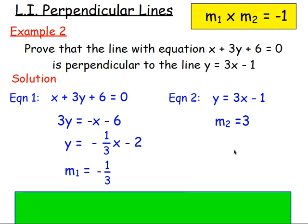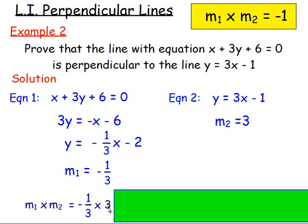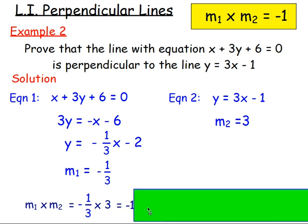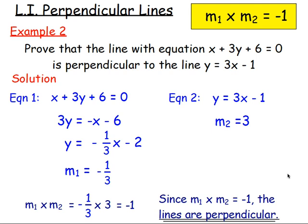To prove that they are perpendicular, multiply the gradients together. m1 times m2 equals negative one third times 3. Treating 3 as 3 over 1: 3 times 1 is 3 in the numerator, 3 times 1 in the denominator, giving negative 3 over 3, which equals negative one. Since m1 times m2 equals negative one, the lines are perpendicular.